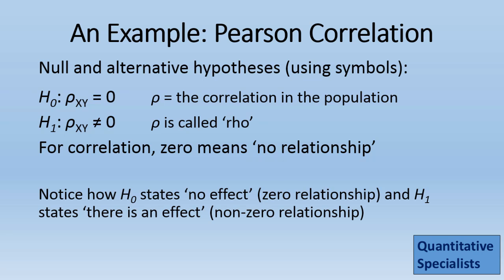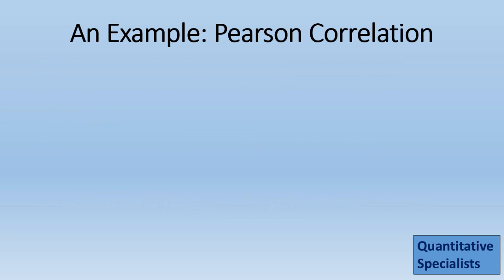In review, the null states there's no effect or a zero relationship, whereas the alternative states there is an effect or a non-zero relationship.